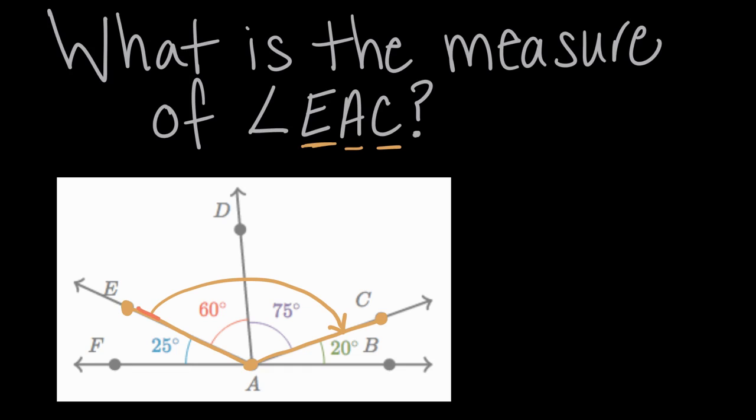This first one is angle EAD, plus from there, angle DAC. These two angles, this first one from here to here, and then the second from here to here, when they're combined, they make the same size opening as our angle. So if we can combine these two angles, we will know the measure of our angle, because these two combined are equal to our entire angle.